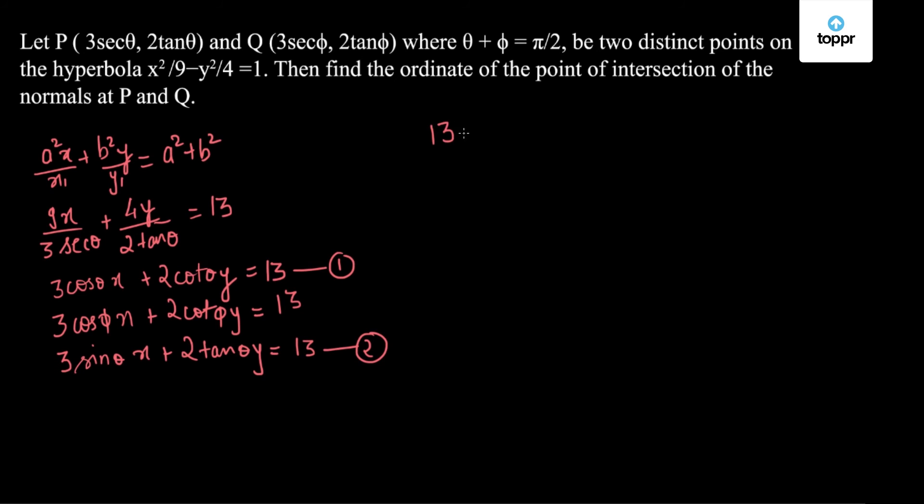So solving for y I will get (2cotθ y)/3 - (2tanθ y)/(3cosθ) = (13 - 3tanθ x)/(3sinθ). So I have tanθ(13 - 2cotθ y) = 13 - 2tanθ y.